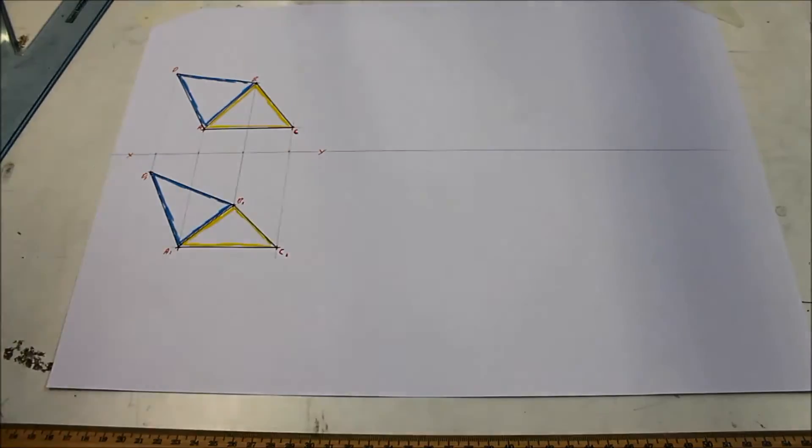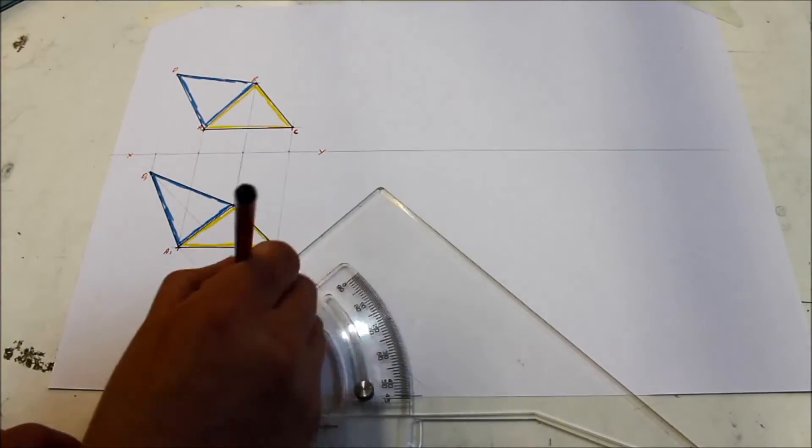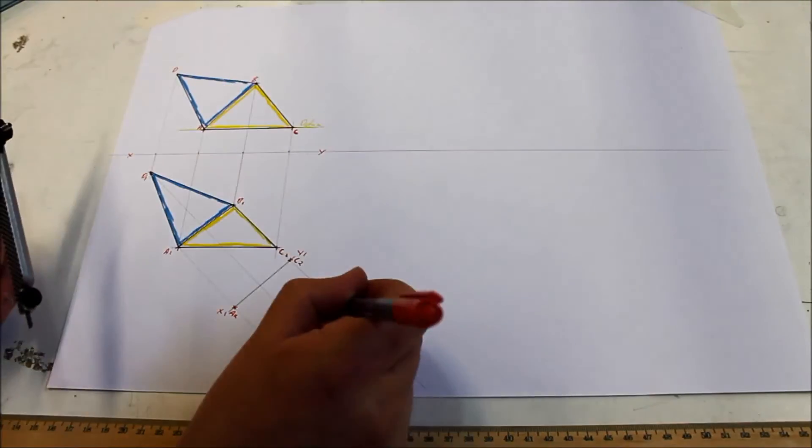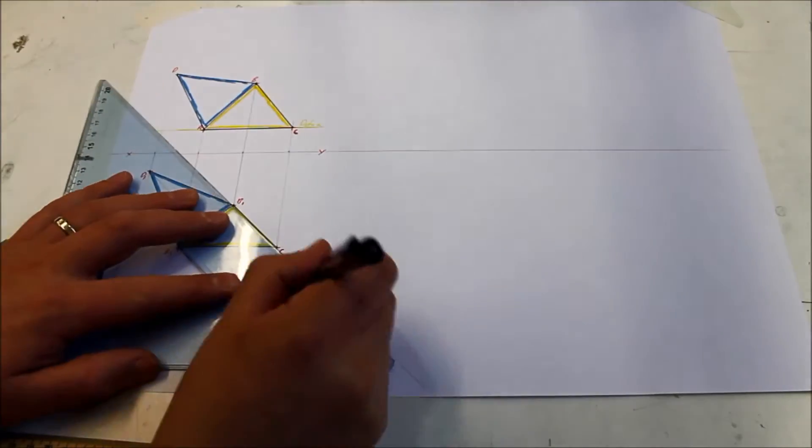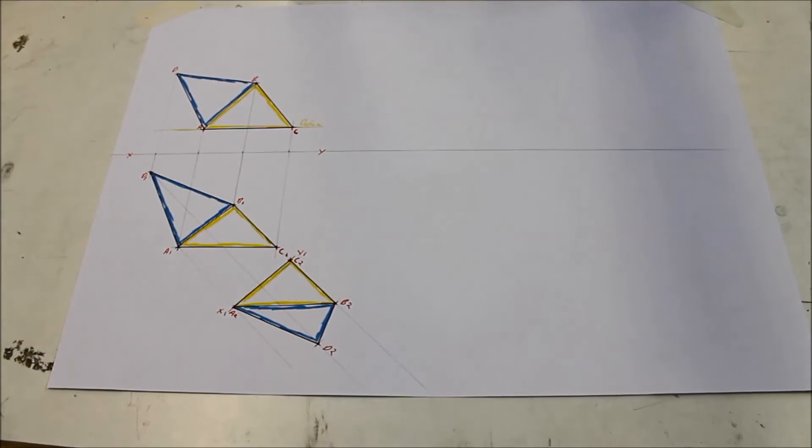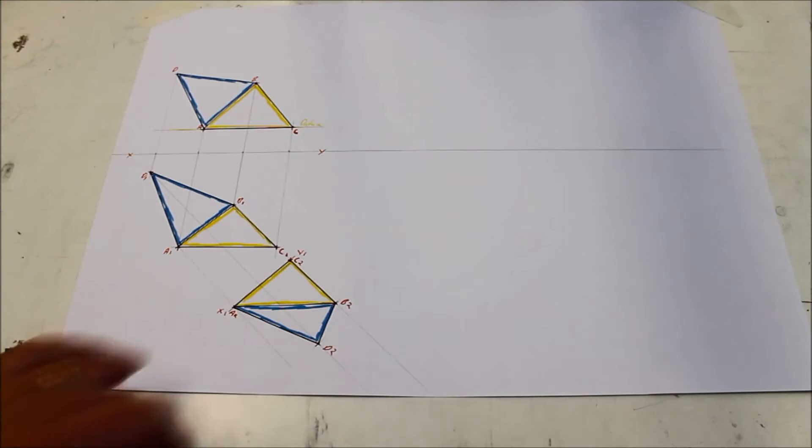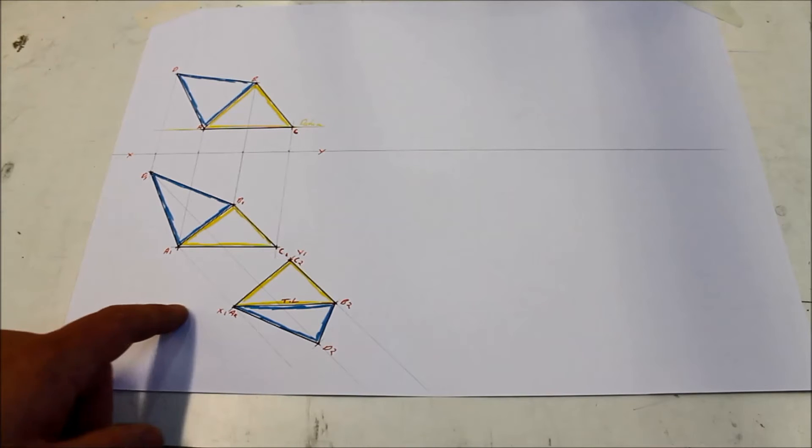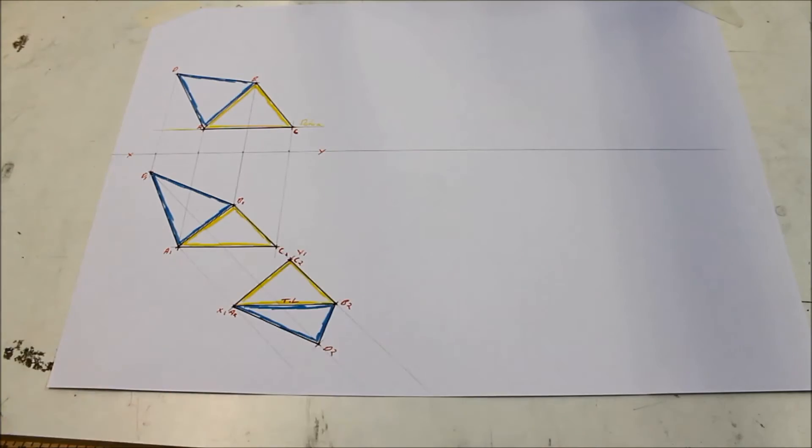So we do the first auxiliary view. That is your first auxiliary view, getting a true length of the line of section which is the line A2 B2. So this now is a true length, so that's the true length. We can project parallel to that now, get a point view, and see our two planes as a V-shape here to an edge view of both, and it'll give us our dihedral angle.